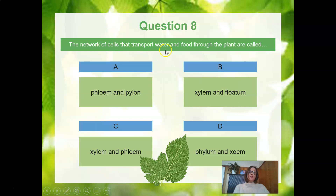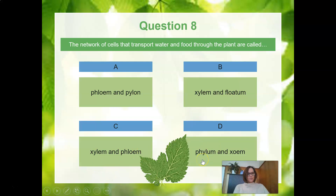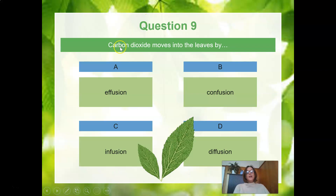The network of cells that transport water and food through the plant are called — we spoke about the vascular system. Is it A, the phloem and pylon; B, xylem and flotum; C, xylem and phloem; or D, phylum and zoom? Terminology is difficult and hard to remember, but we remember xylem and phloem. Carbon dioxide moves into the leaves by — A, effusion; B, confusion; C, infusion; or D, diffusion? The correct answer is that carbon dioxide moves through diffusion.